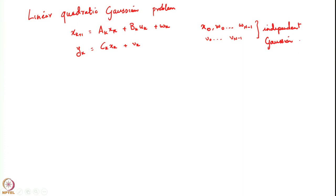In the earlier linear quadratic problem, there was no particular assumption about the variance of the noise. We only assumed the noise was independent with zero mean, and did not assume anything specific about the distribution. The initial state distribution was also given without any specific assumption. But now we assume that these are independent and Gaussian, and that gives you the linear quadratic Gaussian problem.